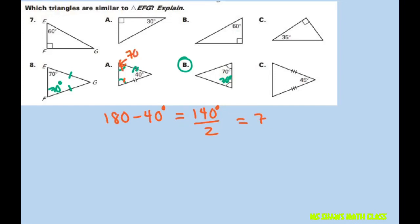So this is 70, this is also 40 because of your triangle sum theorem, so that has to be 40.